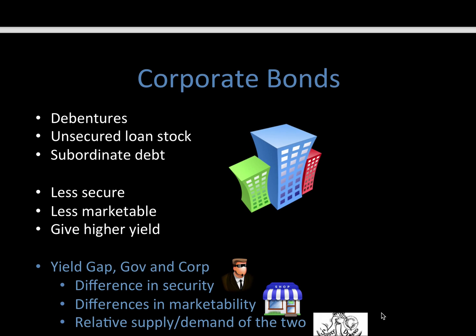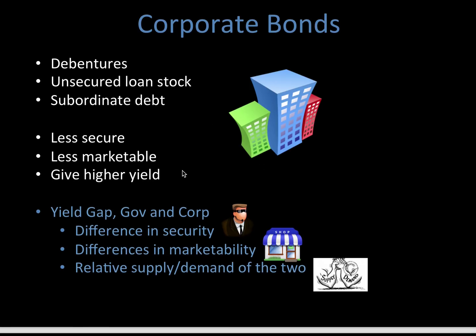Let's look at corporate bonds. They've got various different names and they're at various different levels. They're normally going to give you a higher expected return than government bonds, but the risk is also expected to be higher, because it's more likely that a company goes under than an entire nation. Then there's this yield gap — it's the difference in security and also the difference in marketability. A lot of people are going to be trading government bonds, but not as many are trading corporate bonds. It all comes down to supply and demand — basic economics always rules at the end of the day.